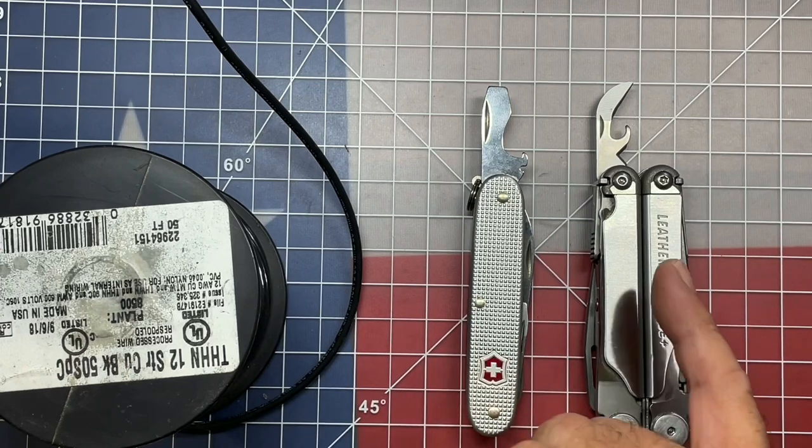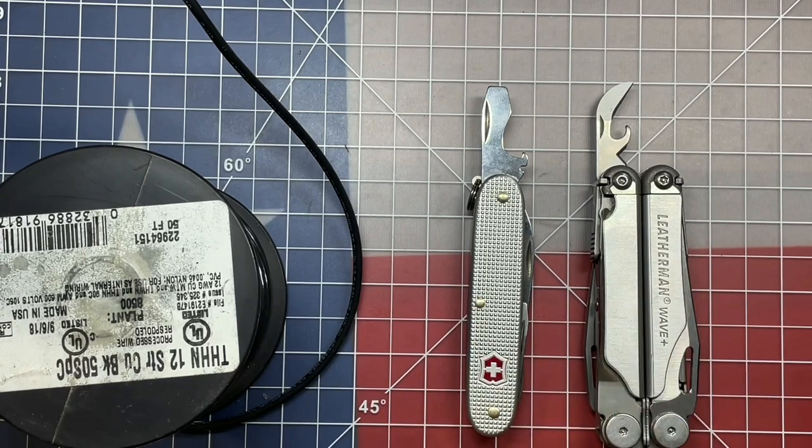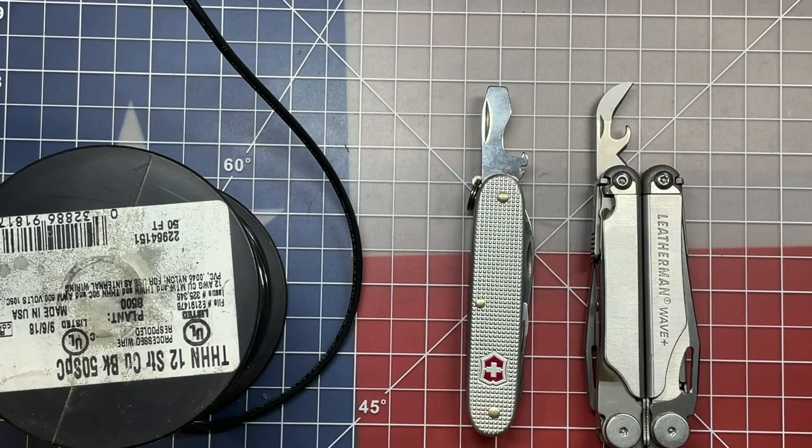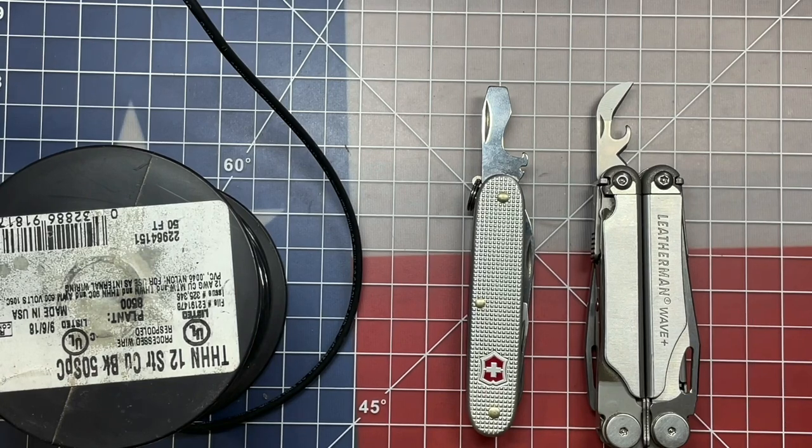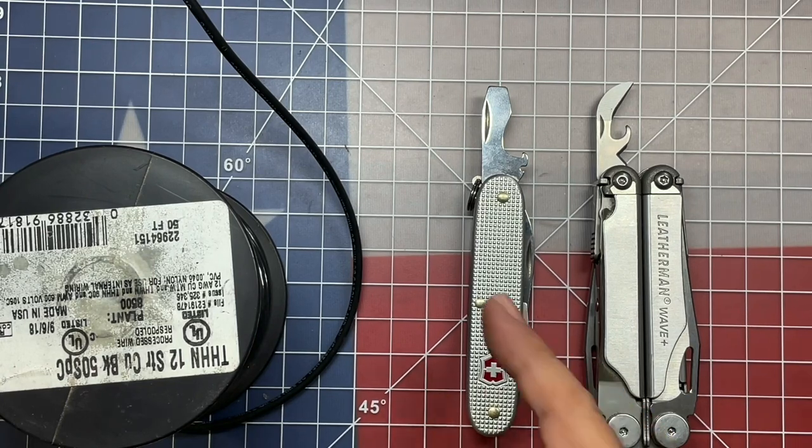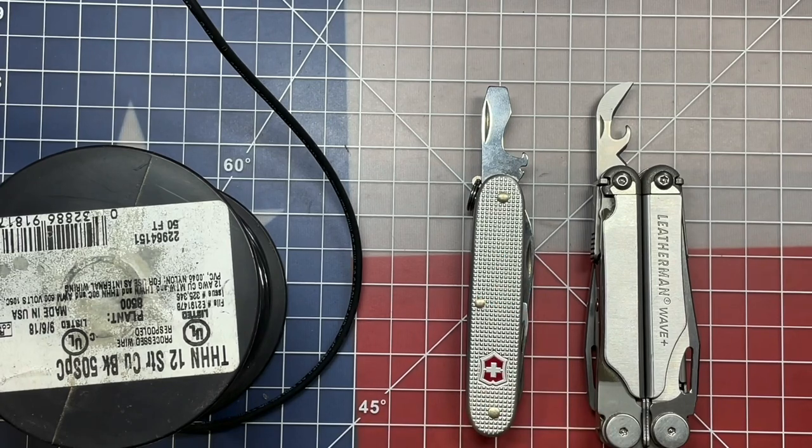Leatherman - for that one I have the Leatherman Wave Plus - and then Victorinox, which it was pointed out to me by one of my subscribers who emailed me that I have been doing the wire stripping functionality completely wrong on Victorinox for a very long time.